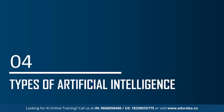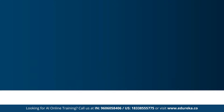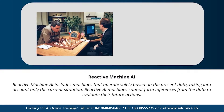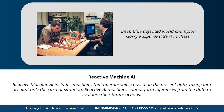Moving on to the different types of artificial intelligence — based on functionality, AI can be categorized into four types. The first type is reactive machines AI. This type includes machines that operate solely based on present data, taking into consideration only the current situation. Reactive AI machines cannot form inferences from data to evaluate future actions. An example is IBM's Deep Blue chess program that beat world champion Garry Kasparov — one of the most impressive AI machines built so far.